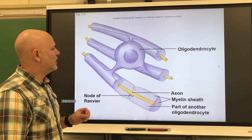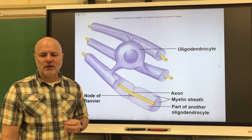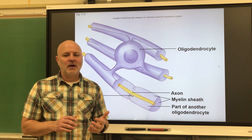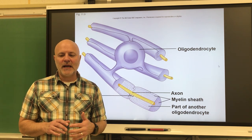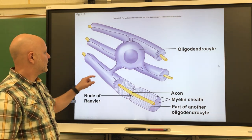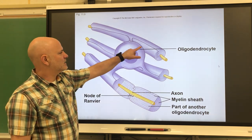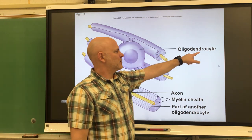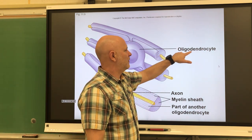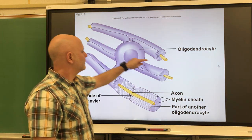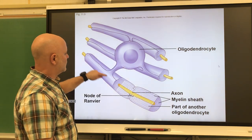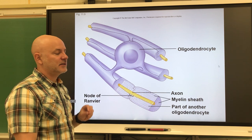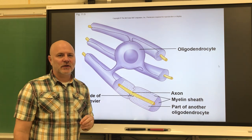Lastly, here are oligodendrocytes — cells that provide a myelin sheath around axons in the central nervous system. 'Oligo' means few, 'dendro' means branches, so it's a cell with a few branches. It produces a myelin sheath around axons in the central nervous system.